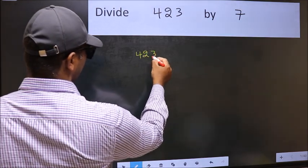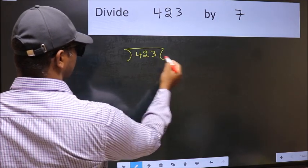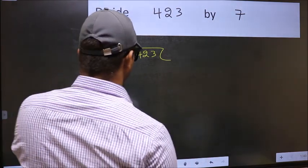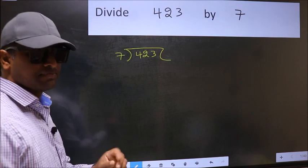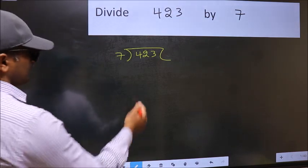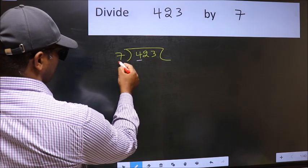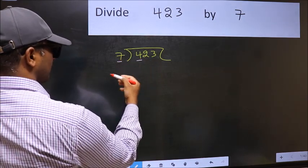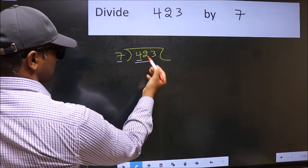423 and 7 here. This is your step 1. Next, here we have 4 and here 7. 4 is smaller than 7, so we should take two numbers, 42.